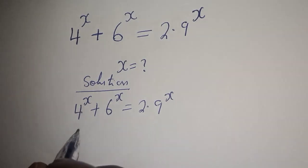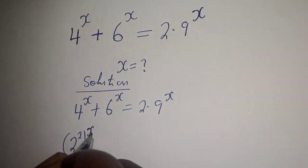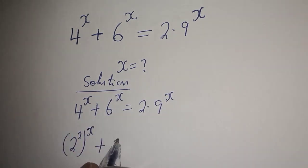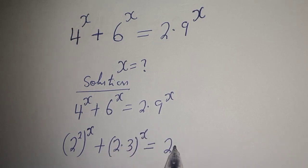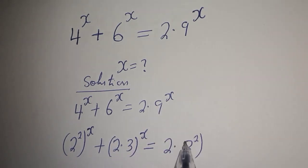Now, 4 to the power s can be written as 2 squared to the power of s, plus 6 to the power s can be written as 2 multiplied by 3 to the power of s, is equal to 2 multiplied by 9 to the power s, which can be written as 3 squared to the power of s.